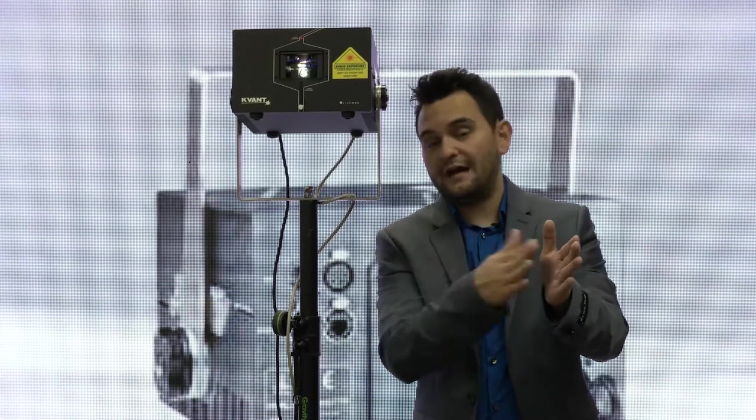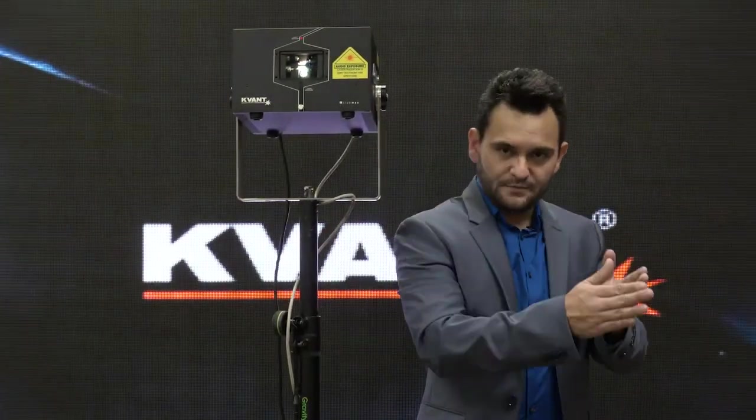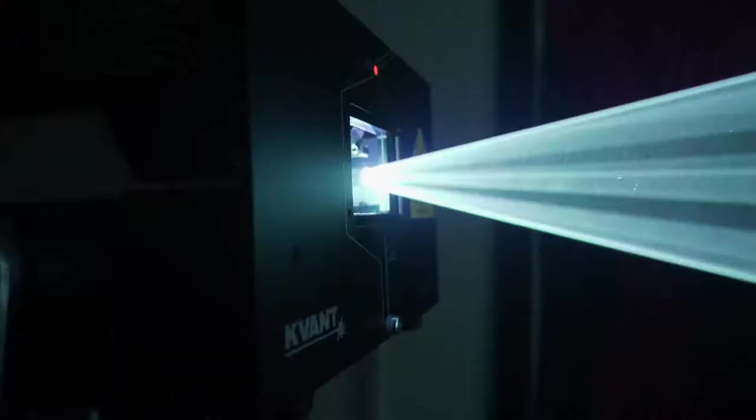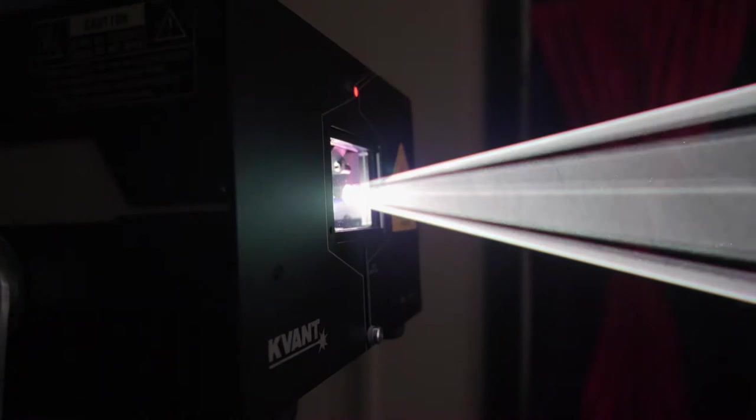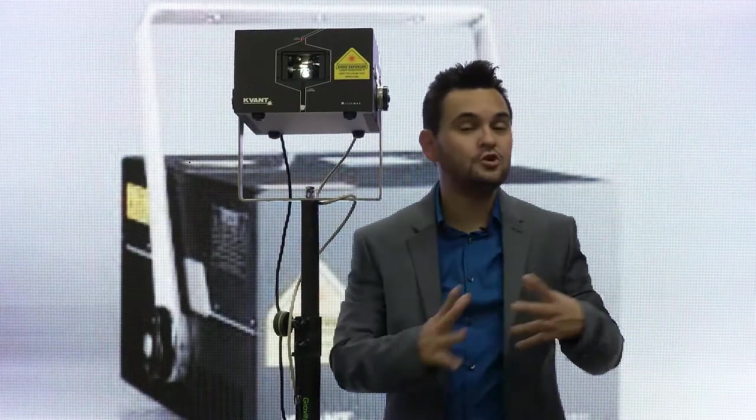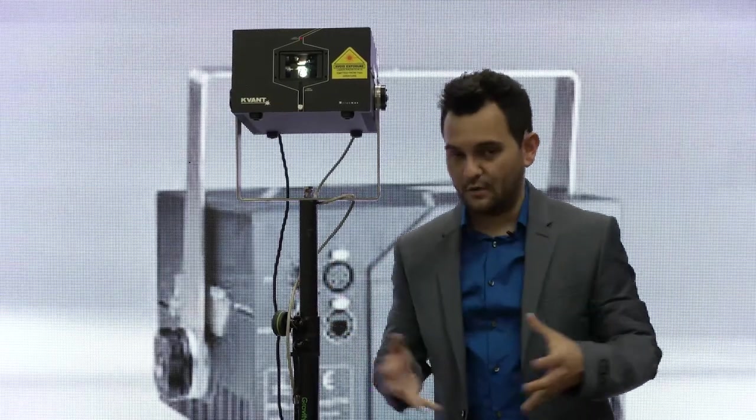You see with lasers, the further that you spread the beam apart, the faster those galvos have to continue moving to be able to go from point A to point B. And obviously the wider you move it, the longer that travel distance is. So you get a little bit of blanking in the image. But because of how good the compact 506 galvos are, you don't get as much blanking and you don't get as much of that distortion that you would get with other lasers.